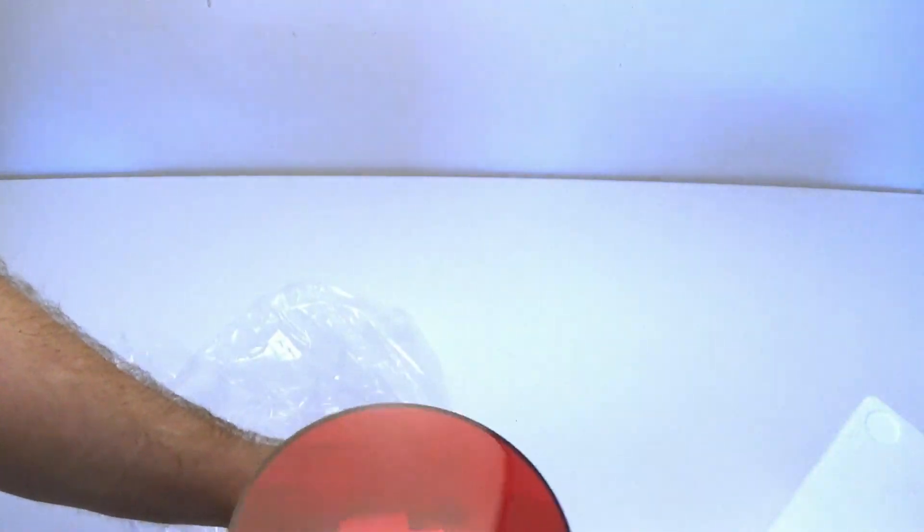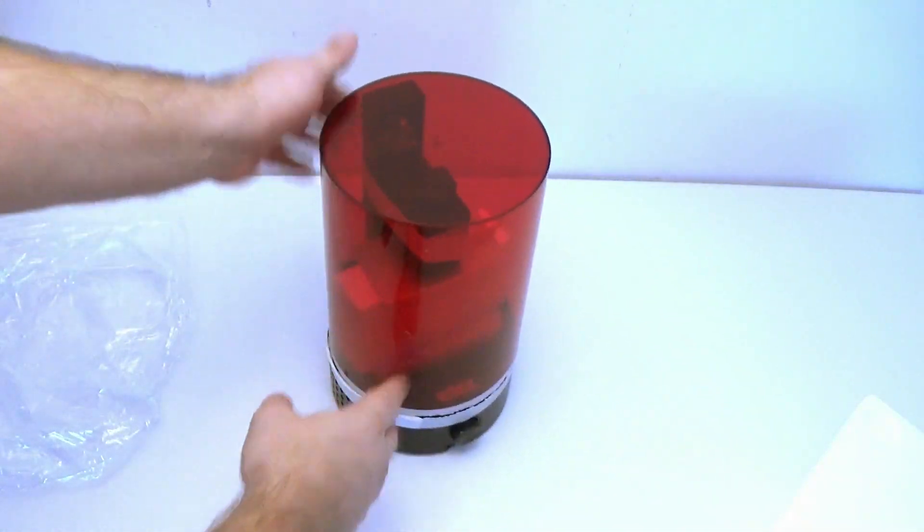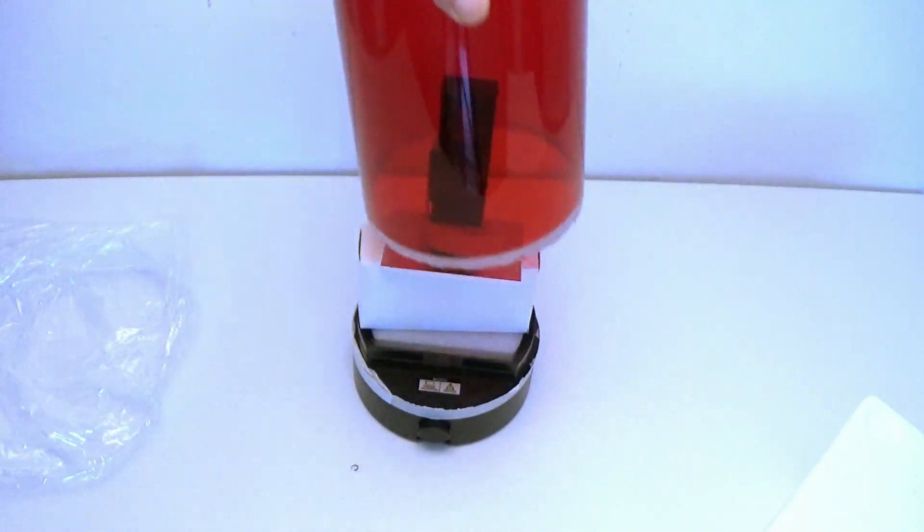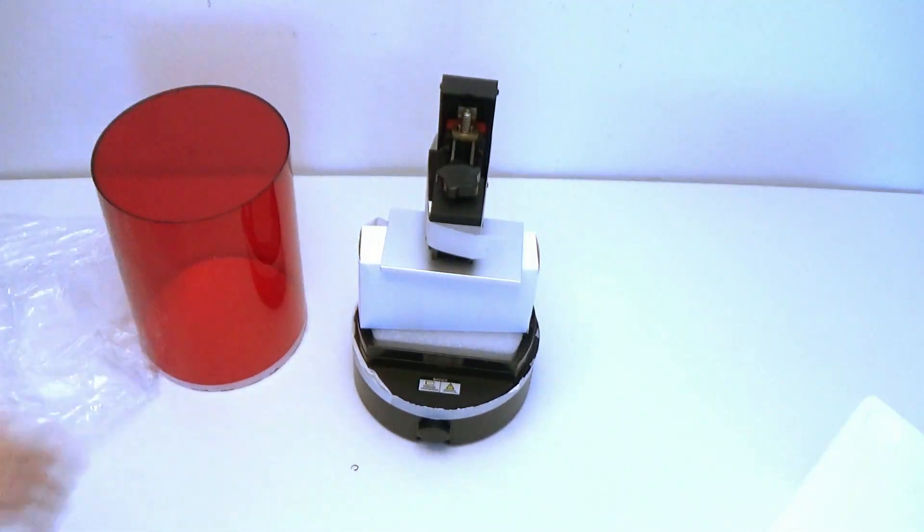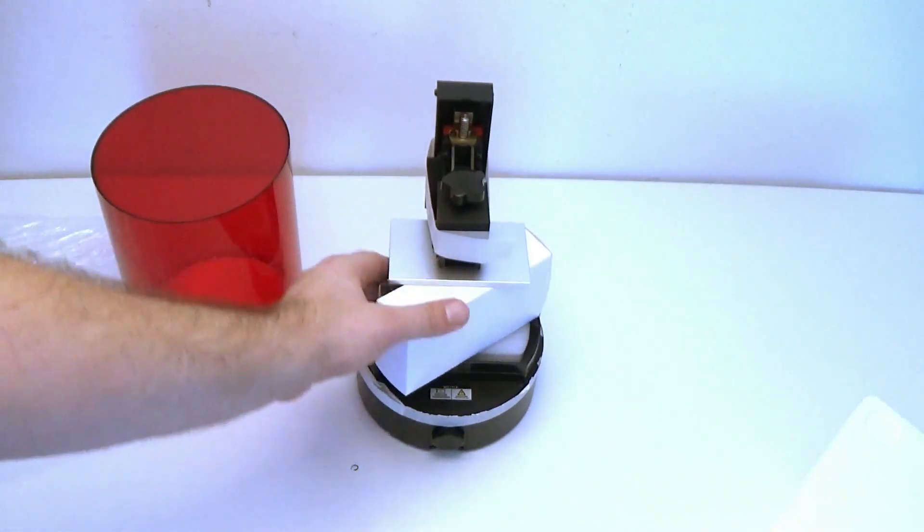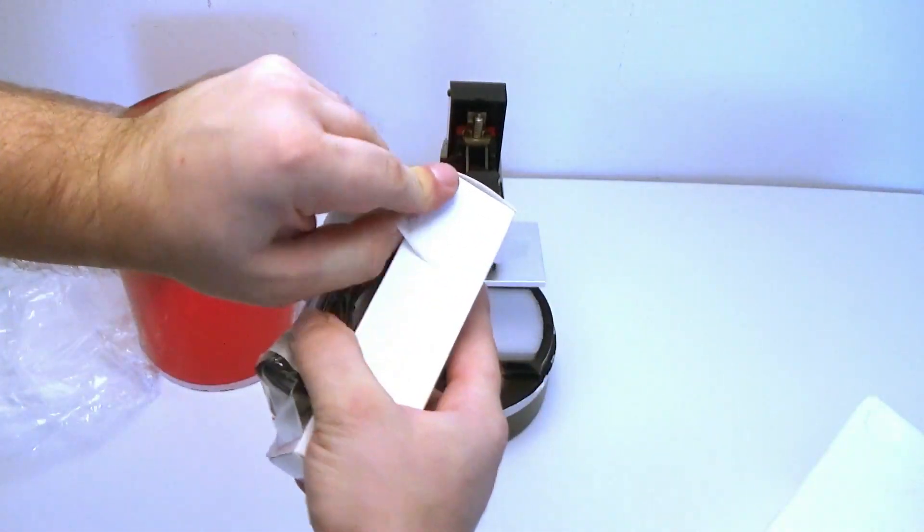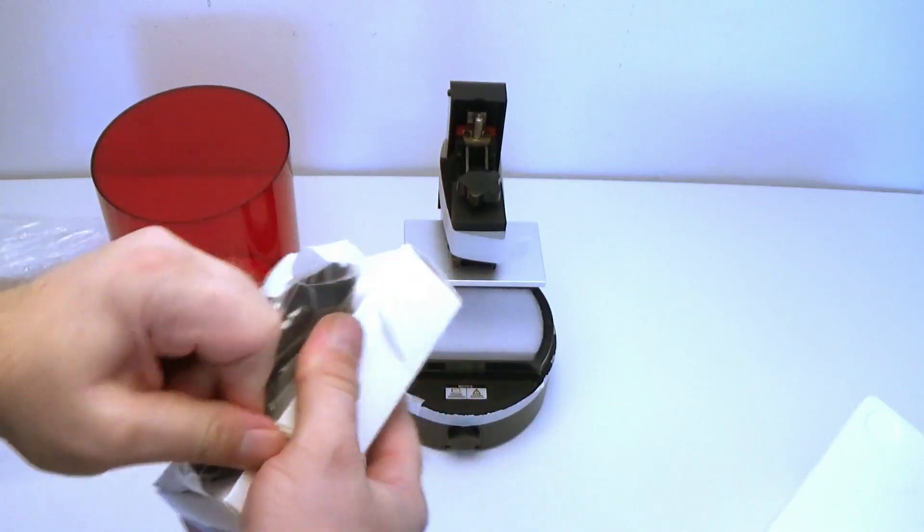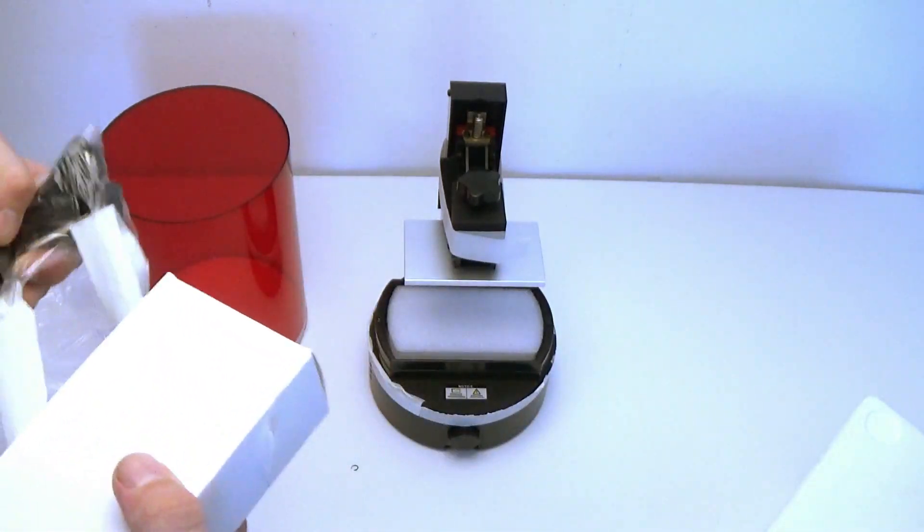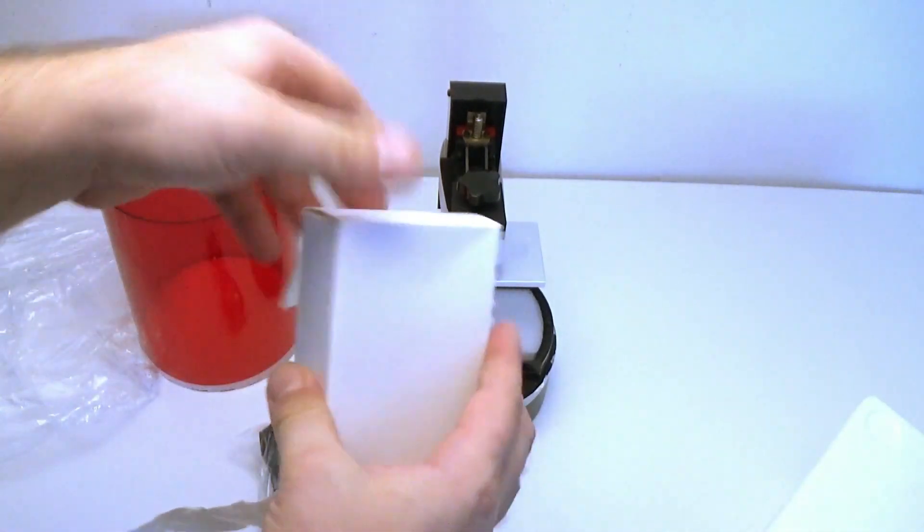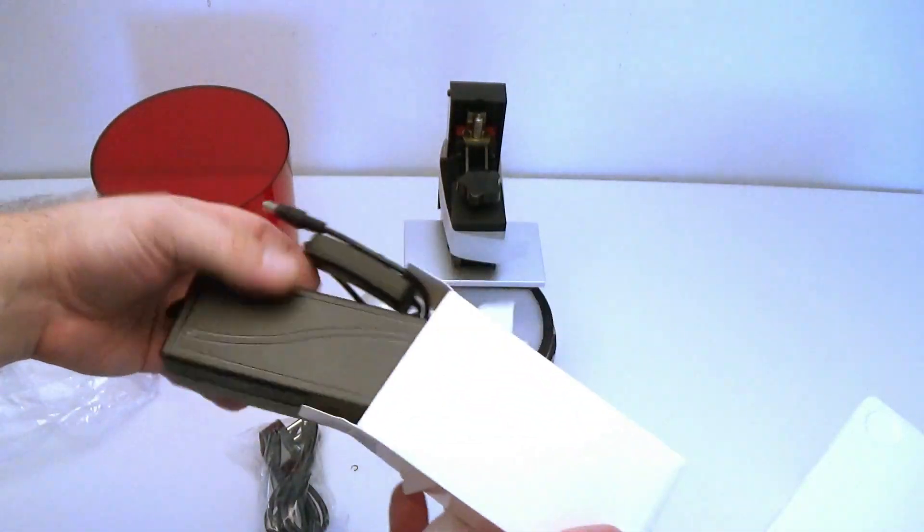DLP stands for Digital Light Processing. Using this technology the object is printed by exposing every layer for a certain amount of time to UV light, which hardens the exposed layer. The build plate is then moved up and the next layer is exposed. This is repeated until the object is finished. The great thing about DLP printers is that you can achieve a lot more detail than with FDM printers.